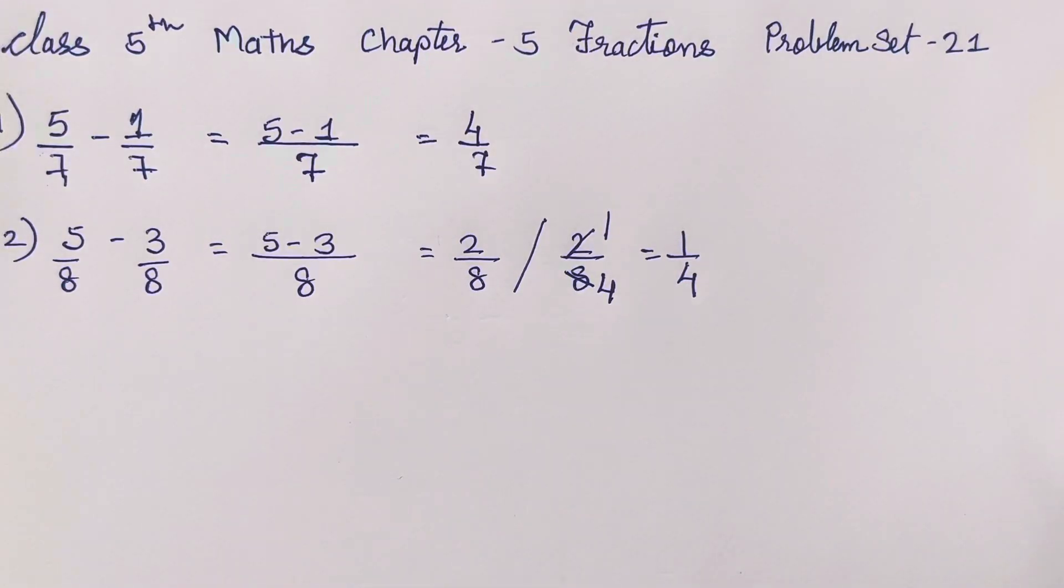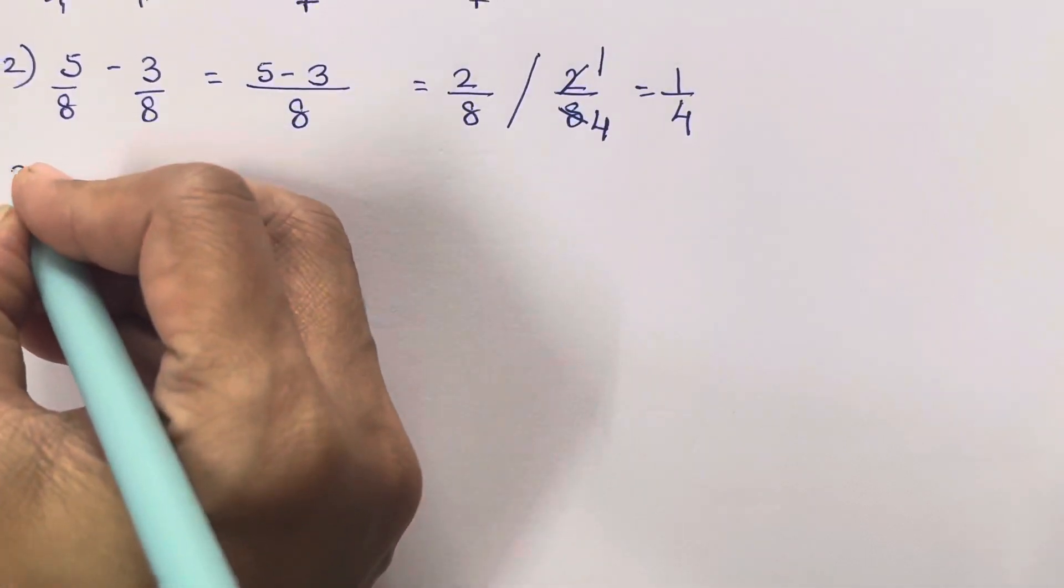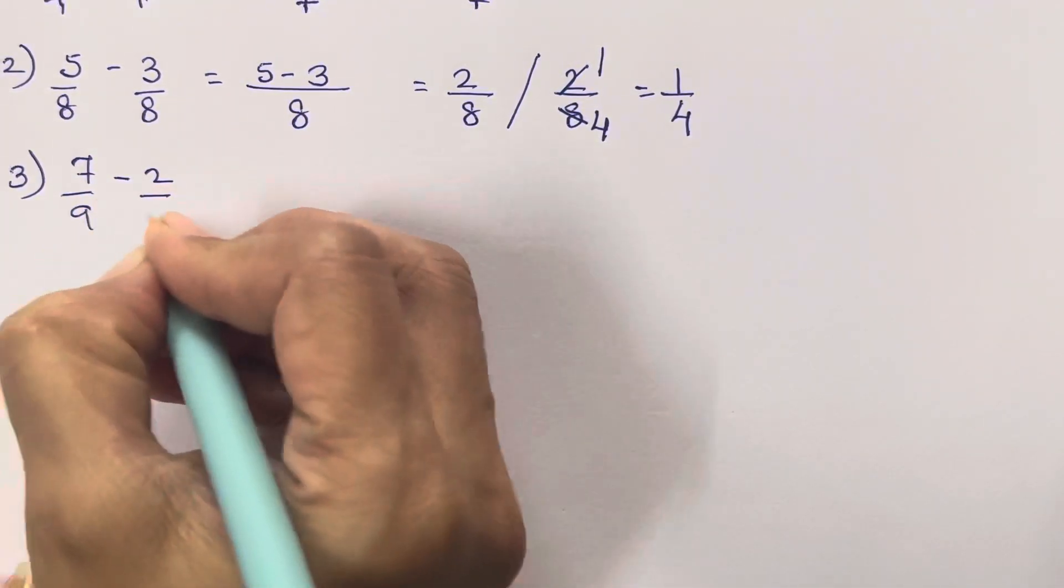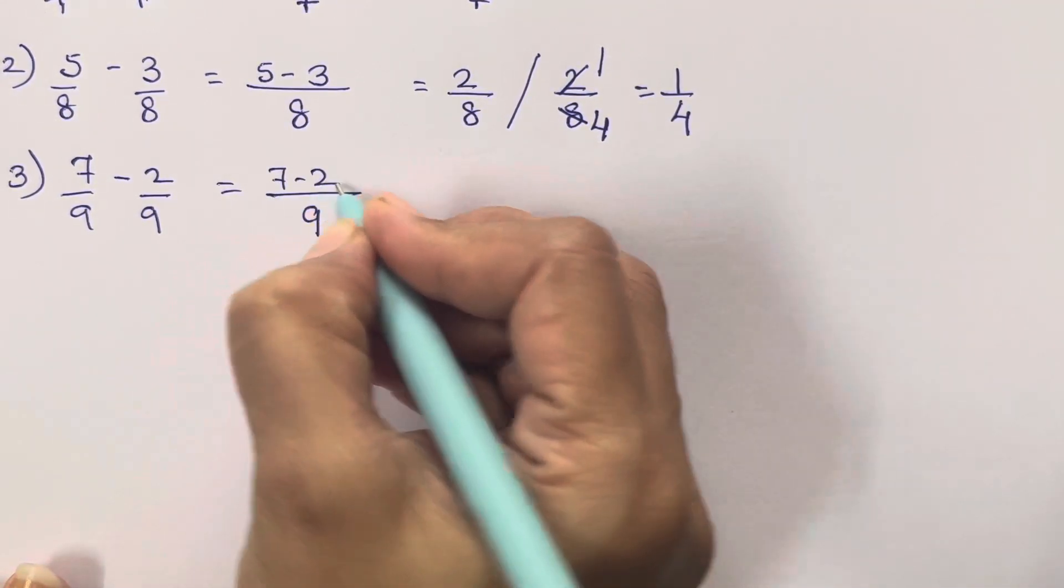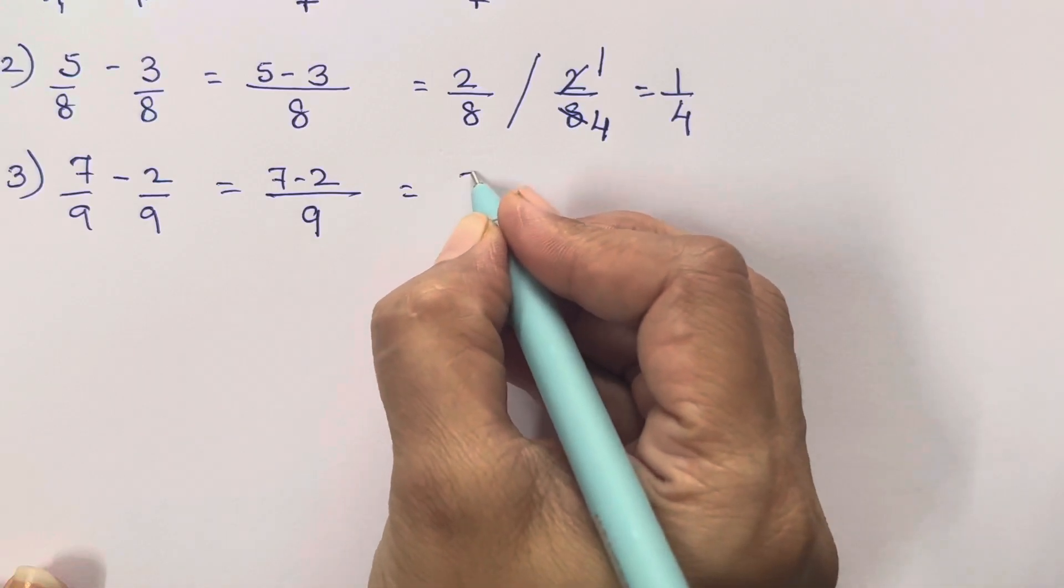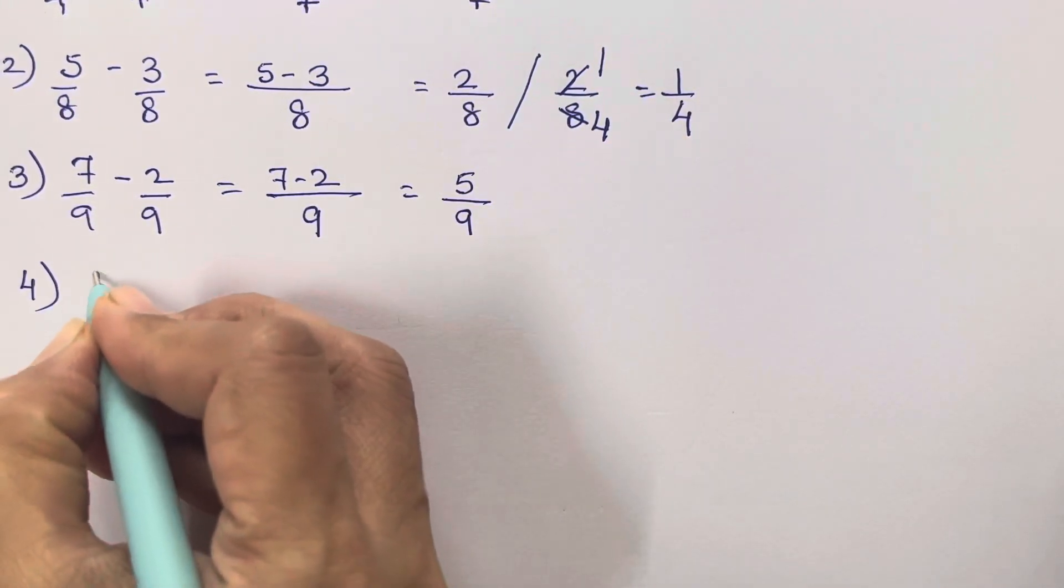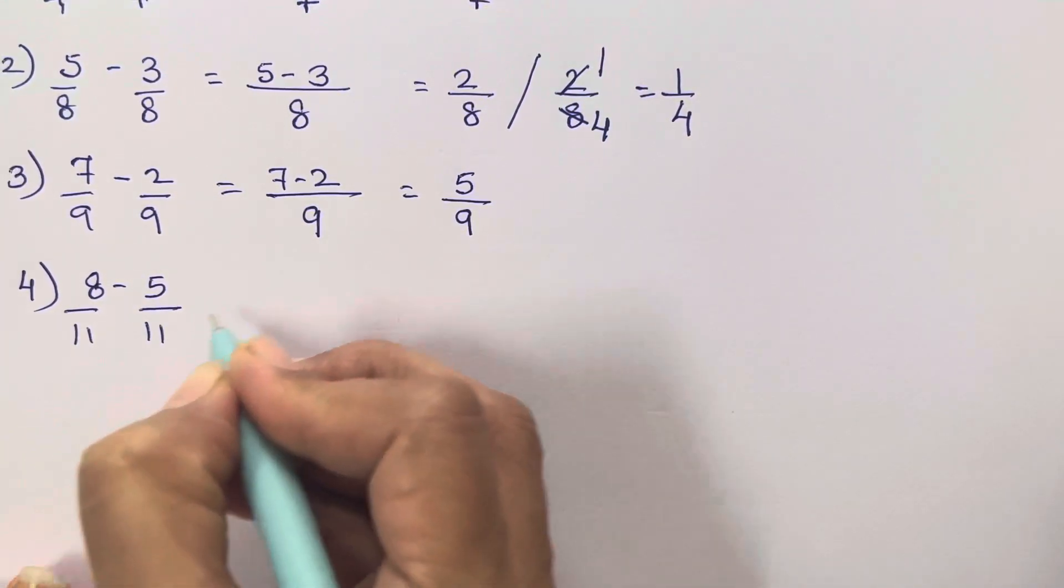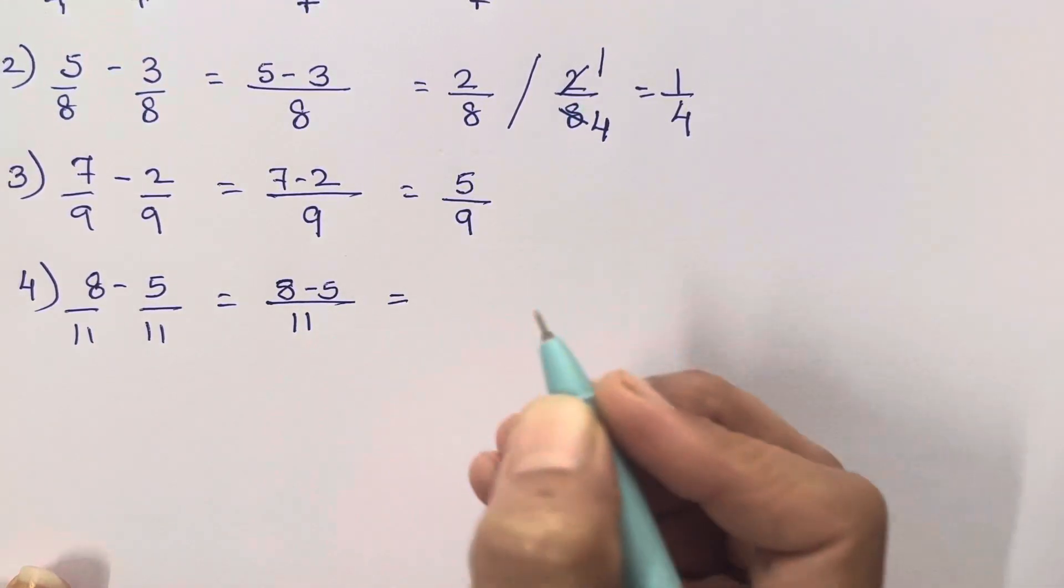Third is 7 minus 2 upon 9, so 9, 7 minus 2 is going to be 5 upon 9. Simple subtraction. You all have to do only the steps. Steps are also easy, not much to do in this exercise.